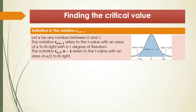The student t distribution is symmetric around 0. If we want the middle area to be 1 minus alpha, then the two boundary values are t_{α/2} and minus t_{α/2}. To find t_{α/2}, the area to its right is alpha over 2. The critical value can be computed using technology or a table called Table A3 or the student t distribution table. Since the curve is symmetric around 0, the lower bound of the confidence interval is minus t_{α/2}, with area alpha over 2 to its left.